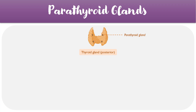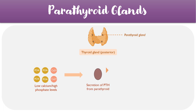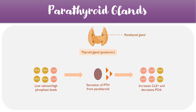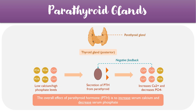When there are low levels of calcium in the blood, or high levels of phosphate, it triggers the parathyroid gland to start secreting PTH or parathyroid hormone into the blood. This PTH then helps to restore the balance, increasing levels of calcium and decreasing levels of phosphate. This entire process is governed by a negative feedback loop — as calcium levels increase, PTH levels decrease, keeping the system in check. The overall effect is therefore to increase serum calcium and decrease serum phosphate.